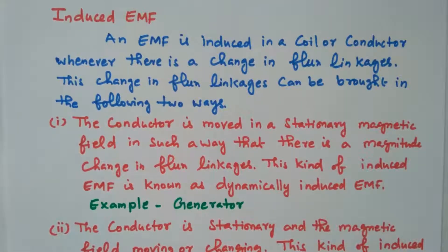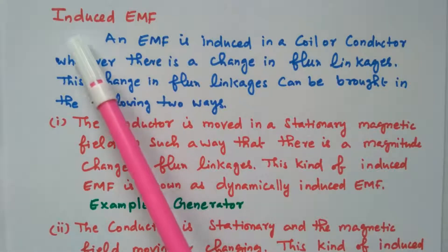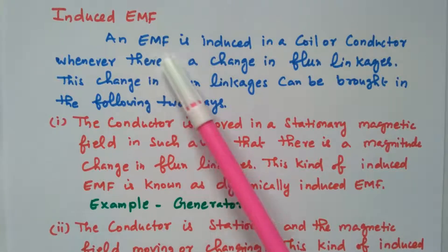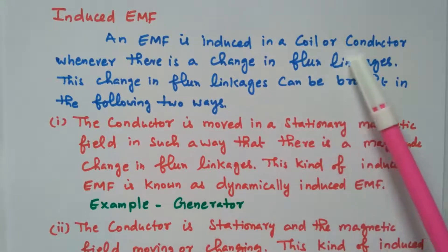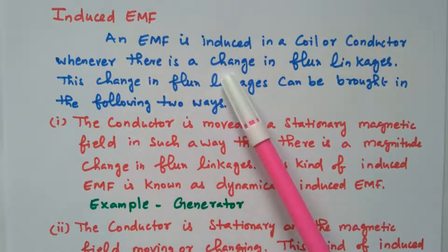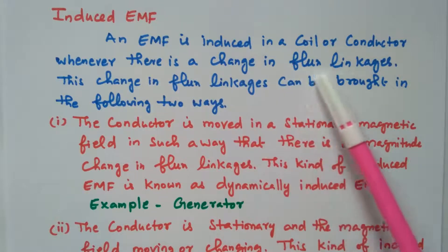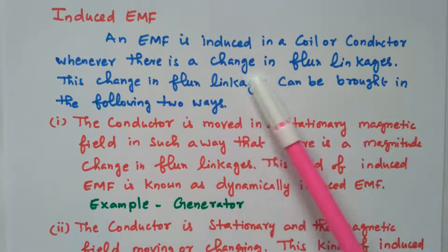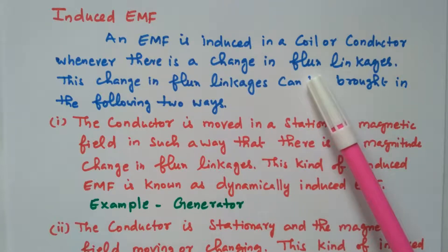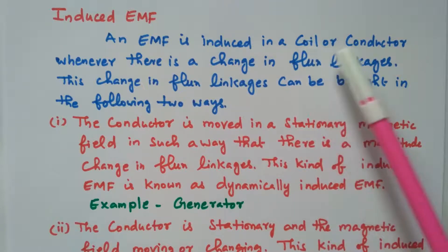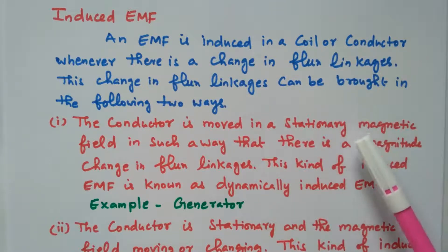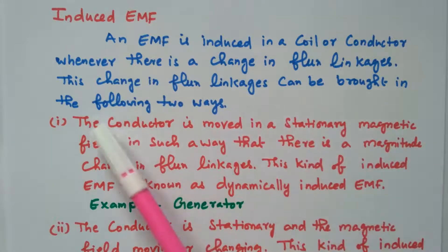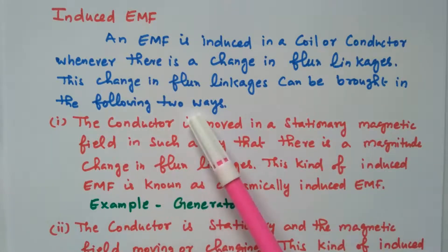Welcome viewers. In this video we will see the induced EMF. An EMF is induced in a coil or conductor whenever there is a change in flux linkage — that is based on Faraday's law. This change in flux can be brought about in two different ways.